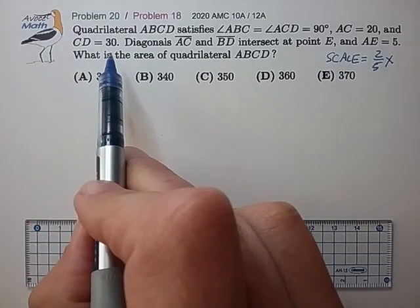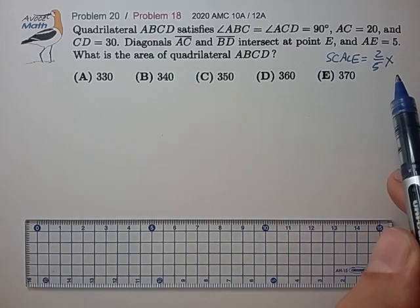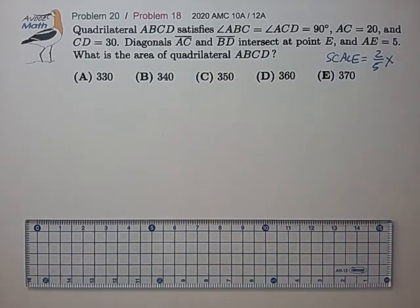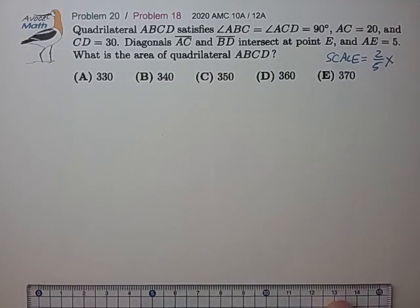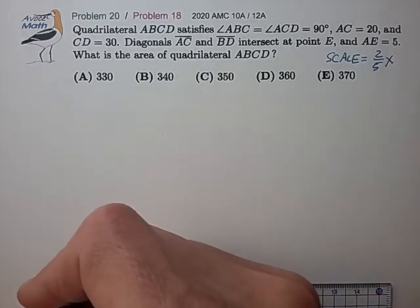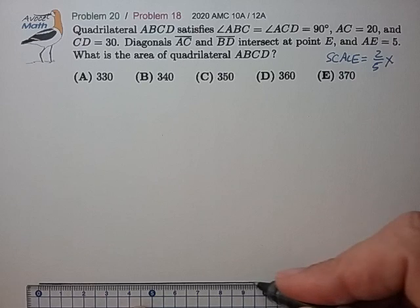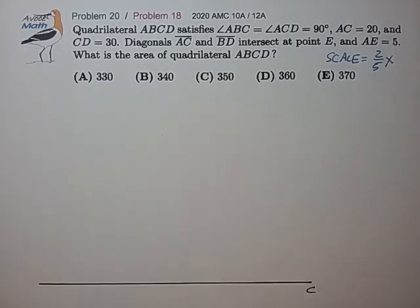Now CD has length 30 times the scale of 2 fifths equals 12. So that's the scaled length of CD in centimeters. Let's go ahead and draw that first down here as our base. That's point CD length 30.